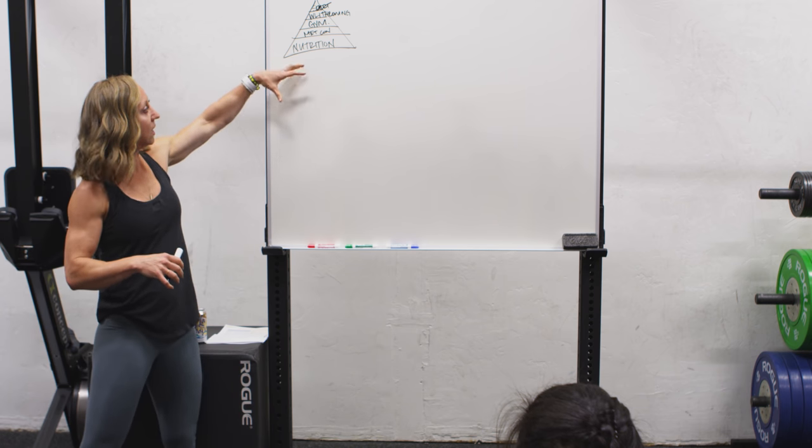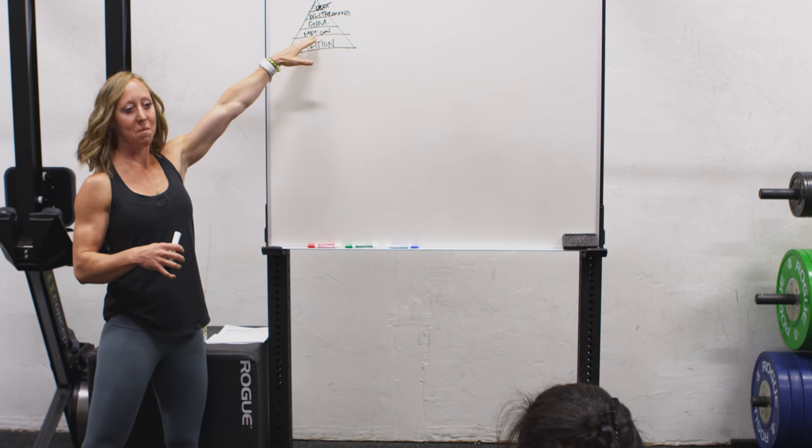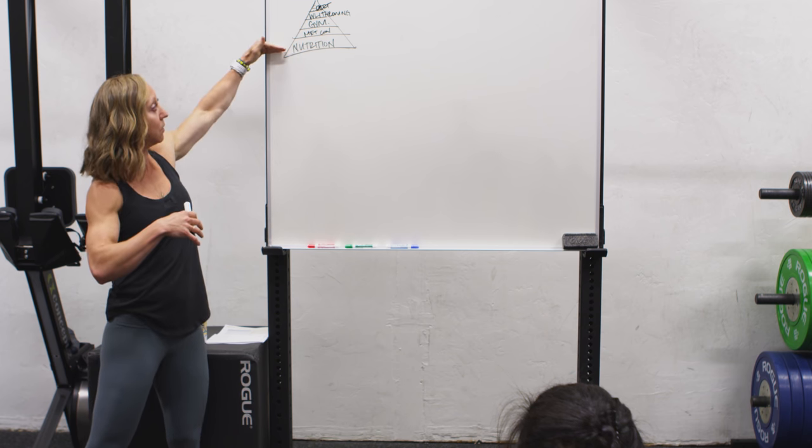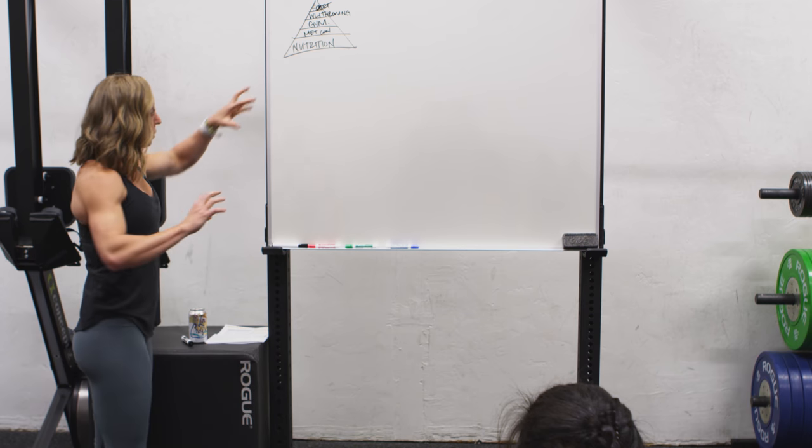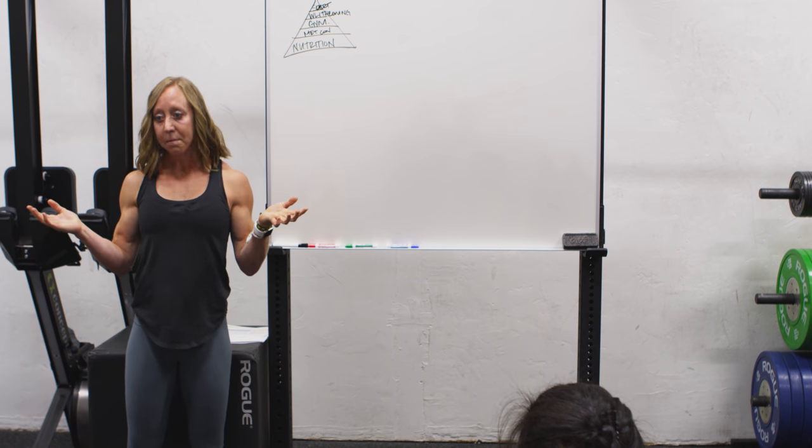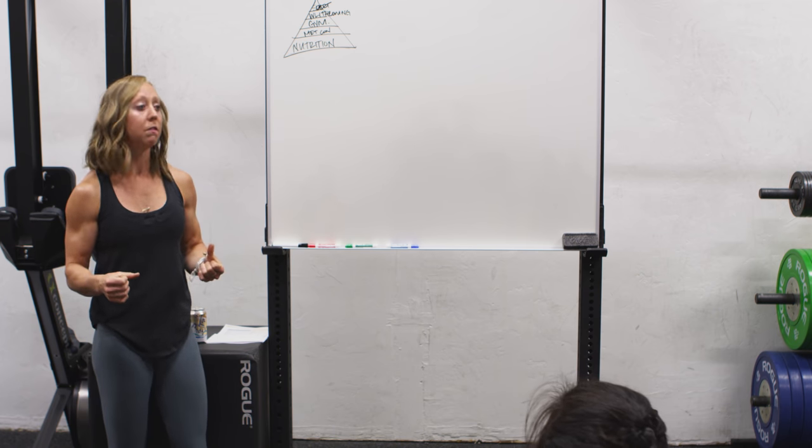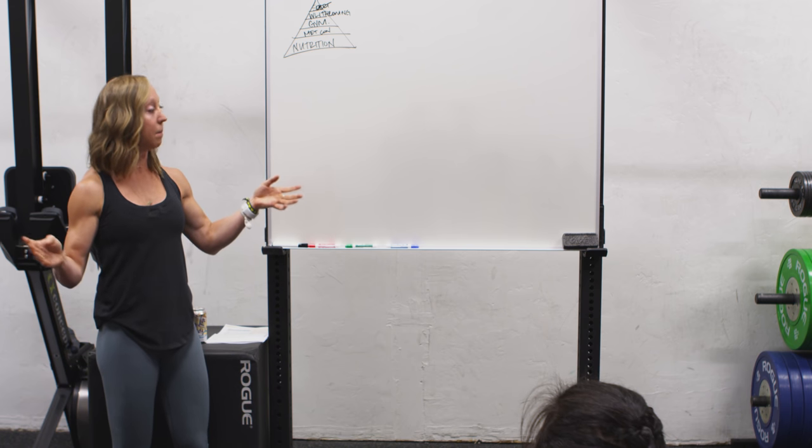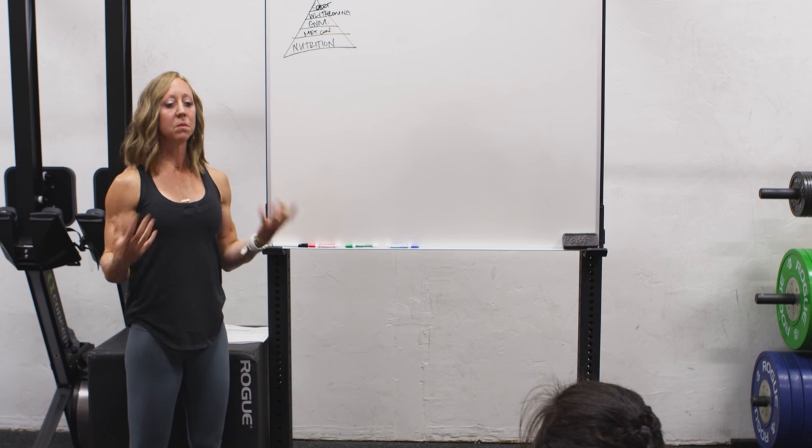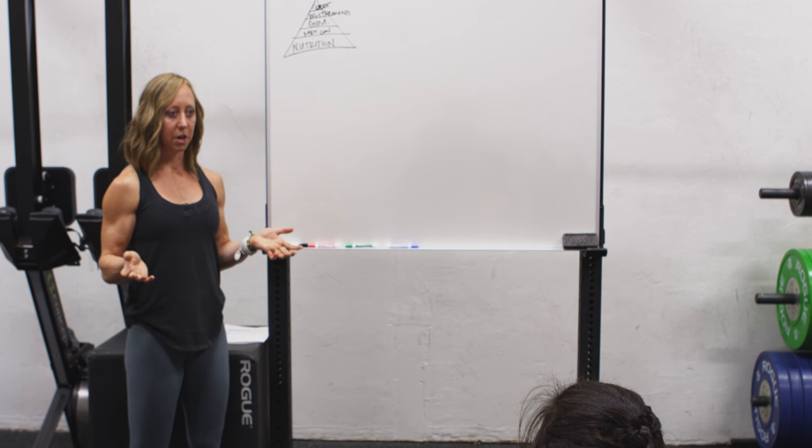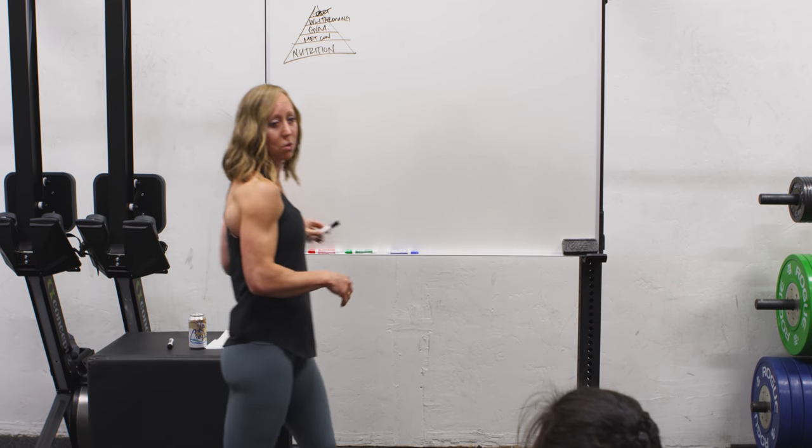So nutrition is the base of this pyramid. Really when we think about this in our training, this should be the first thing that we focus on. A lot of us mix these layers up. Ideally you get your nutrition in line first, but a lot of us work out first and then we circle back to nutrition. Nutrition is cool because it's something that you control 100%. Yeah, we come to class, we work out for an hour a day, but you can mess all of that up really easily in the other 23 hours of your day.